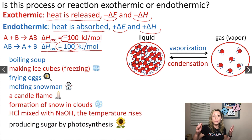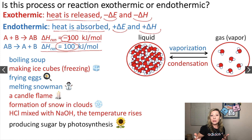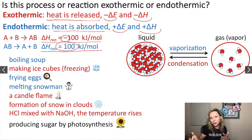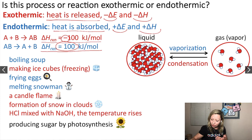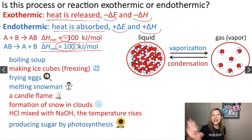How about producing sugar by photosynthesis? Plants photosynthesize — do we need sunlight for this process? Definitely we do. So we need to add heat into this reaction for it to happen. This is going to be an endothermic process.